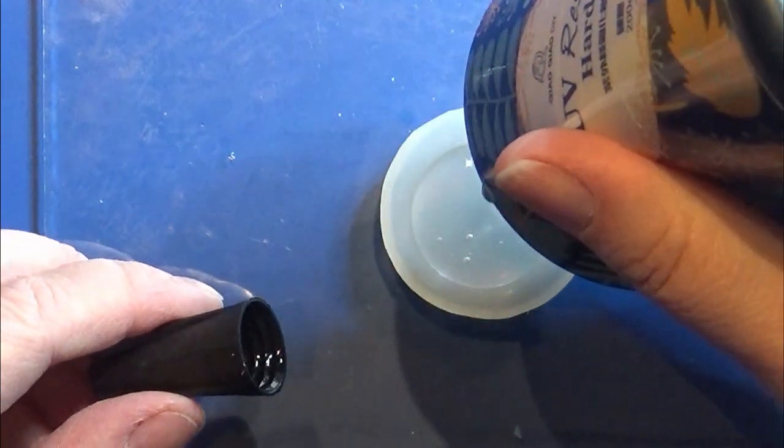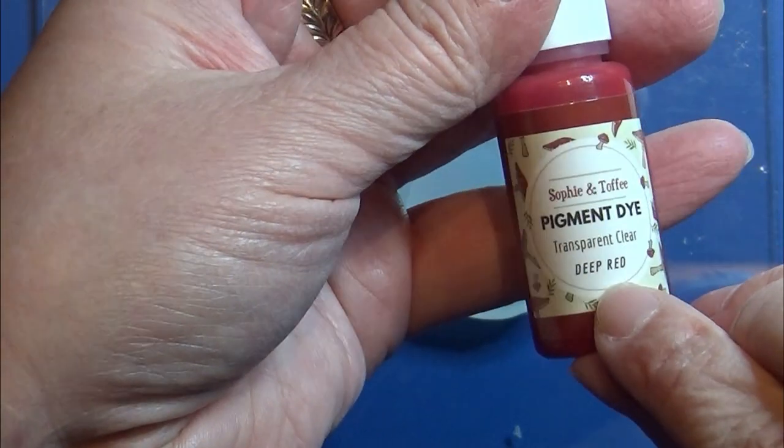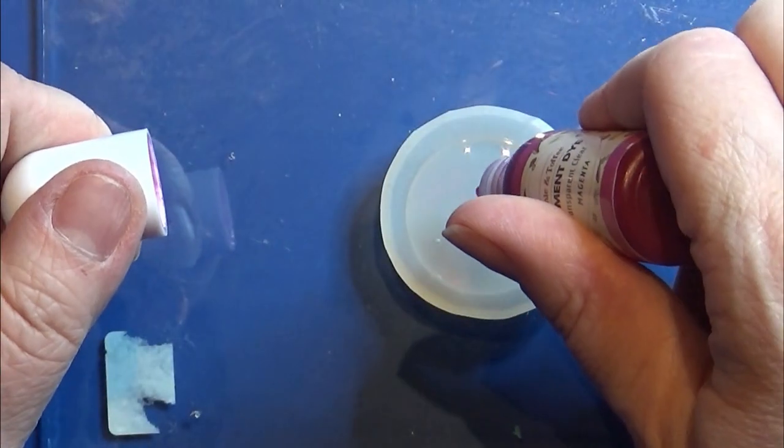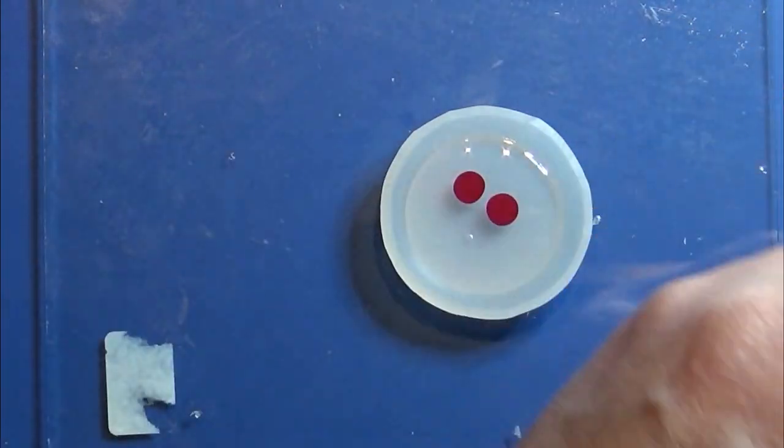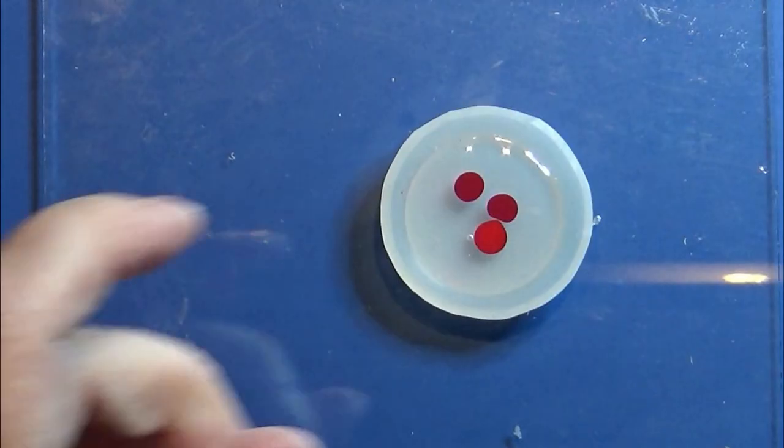Then I make some UV resin, this is the hard one, with a deep red pigment dye and a magenta pigment dye. And I'm actually using a tiny bit of black as well to make it a little more of a deep color.